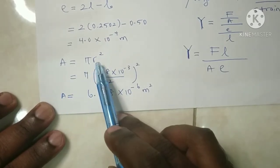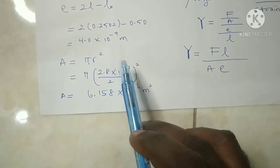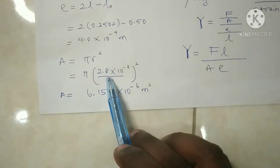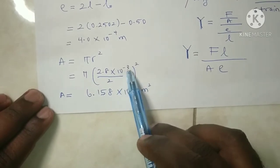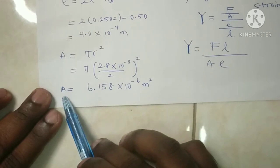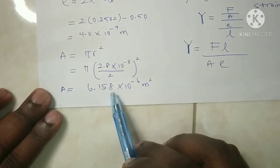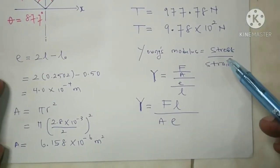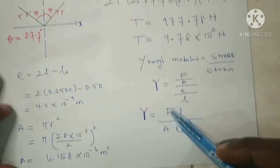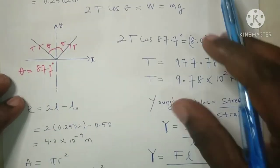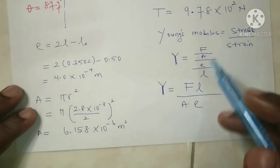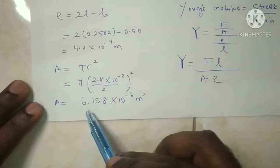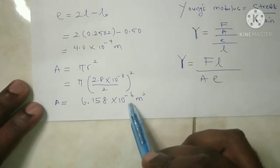The radius is the diameter divided by 2. The diameter of the wire is 2.8 mm, which converts to 2.8 × 10⁻³ m divided by 2, giving the radius. The cross-sectional area is 6.158 × 10⁻⁶ m². We now have all three important quantities: force (tension = 9.78 × 10² N), length (0.5 m), and cross-sectional area (6.158 × 10⁻⁶ m²).